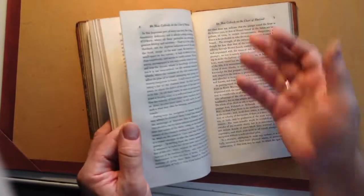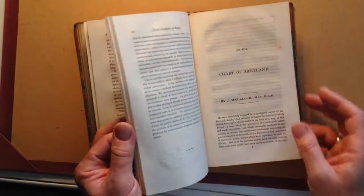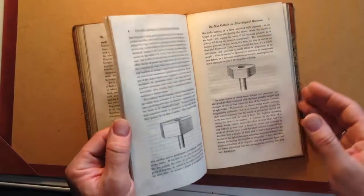There's a section on the granite of Aberdeenshire. There's a section on a map of Scotland, of Shetland, that was published at the time, Dr. McCulloch on the chart of Shetland, crystalline structure of rocks.